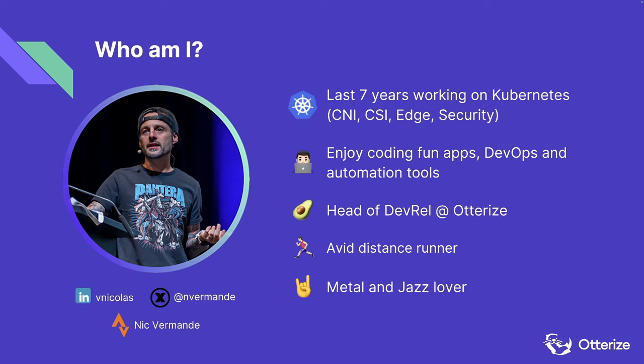My name is Nick. I'm the Head of Developer Relations at Authorize. At Authorize, we aim at building products and open-source projects focused on the automation of the control of identity and access management policies for workloads. We're going to see a lot of principles that we apply to facilitate the life of different personas within different teams, like platform engineering, security engineers, and of course, developers.